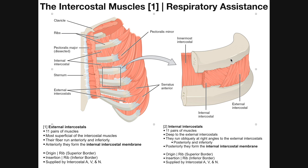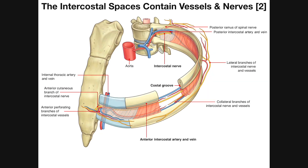Before we dive into the details on the intercostal muscles, let's look at this picture. We have two ribs shown here. They attach posteriorly to the thoracic vertebra and anteriorly to some part of the sternum. Some ribs don't attach to the sternum at all, and some attach more indirectly via the costal cartilage of Rib 7. We can get an appreciation for the space that lies between two adjacent ribs, which would be termed an intercostal space.